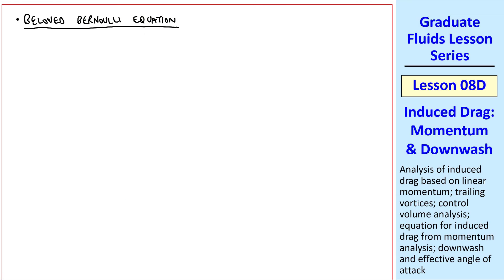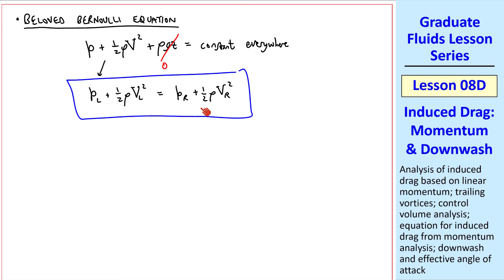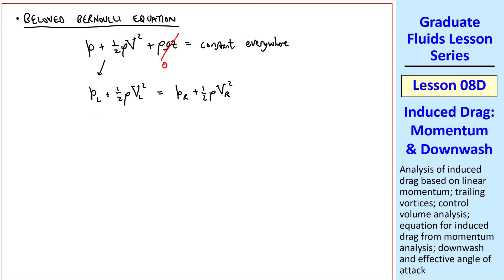Well, the beloved Bernoulli equation, as discussed in a previous lesson, is P plus one-half rho magnitude of velocity squared plus rho gz equal constant, and since it's irrotational flow, it's the same constant everywhere. Well, since the two areas are at the same elevation, and there's no gravity in the x direction, the gravity term goes away. So we write this as PL plus one-half rho VL squared equal PR plus one-half rho VR squared, where L and R refer to the left and right faces, respectively.